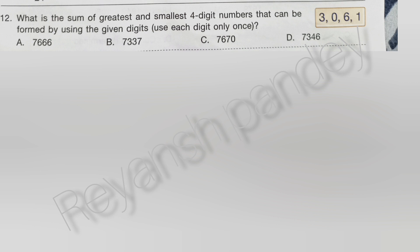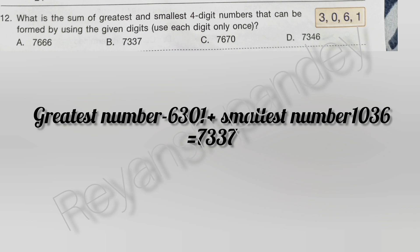What is the sum of the greatest and smallest four-digit number that can be formed using the given digits? Use each digit only once. The greatest number is 6,301 and the smallest number is 1,036. The sum of these numbers is 7,336. So the answer is B.